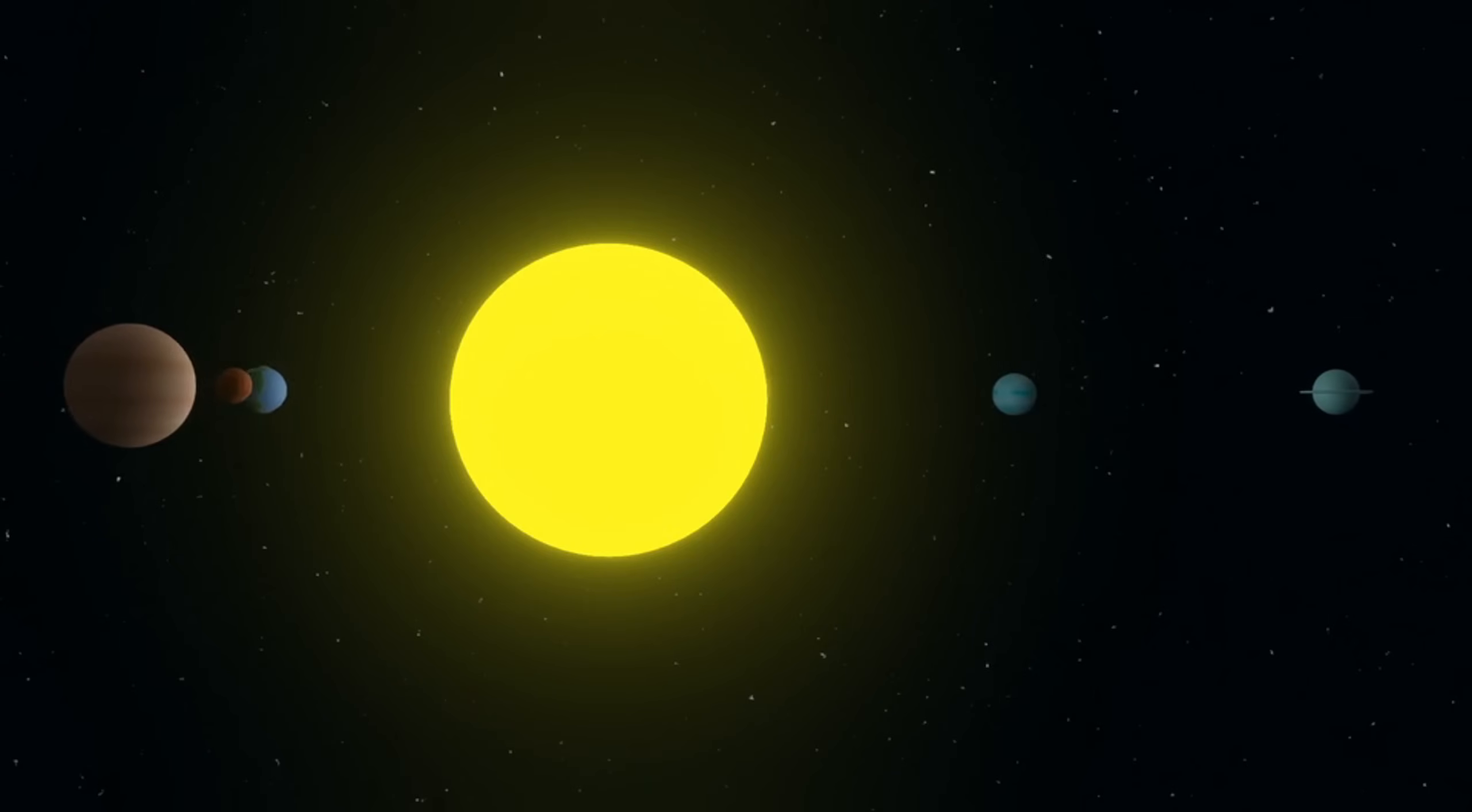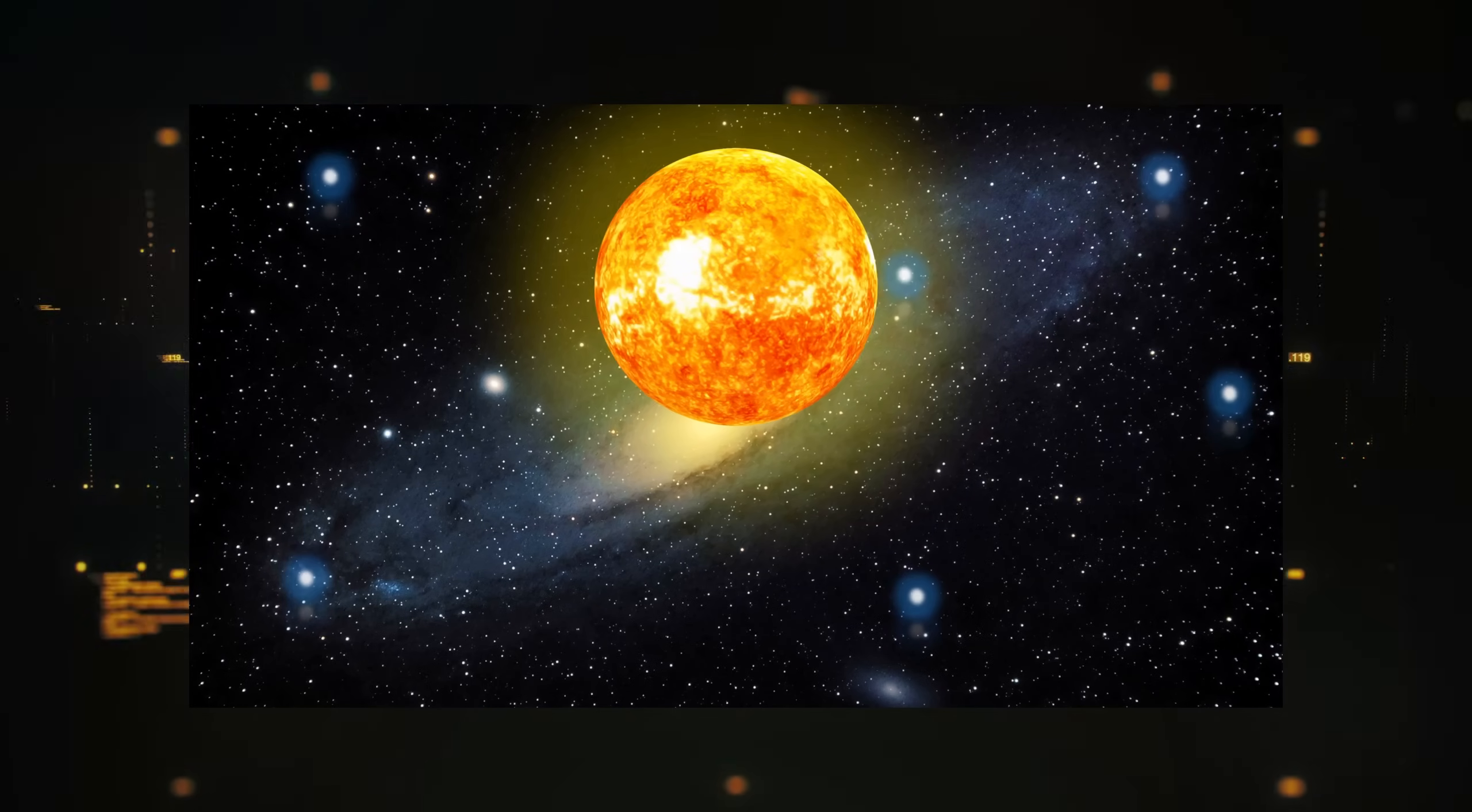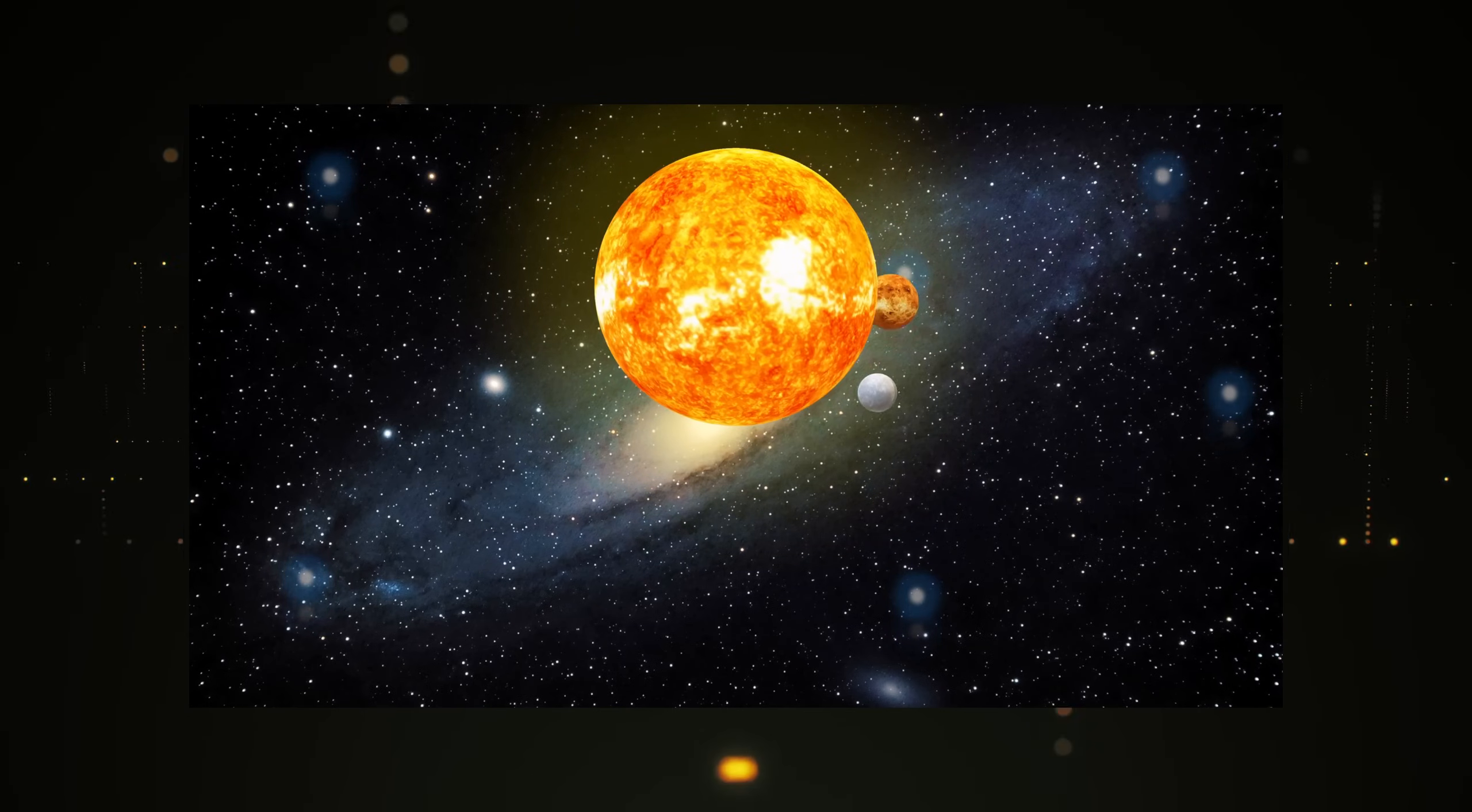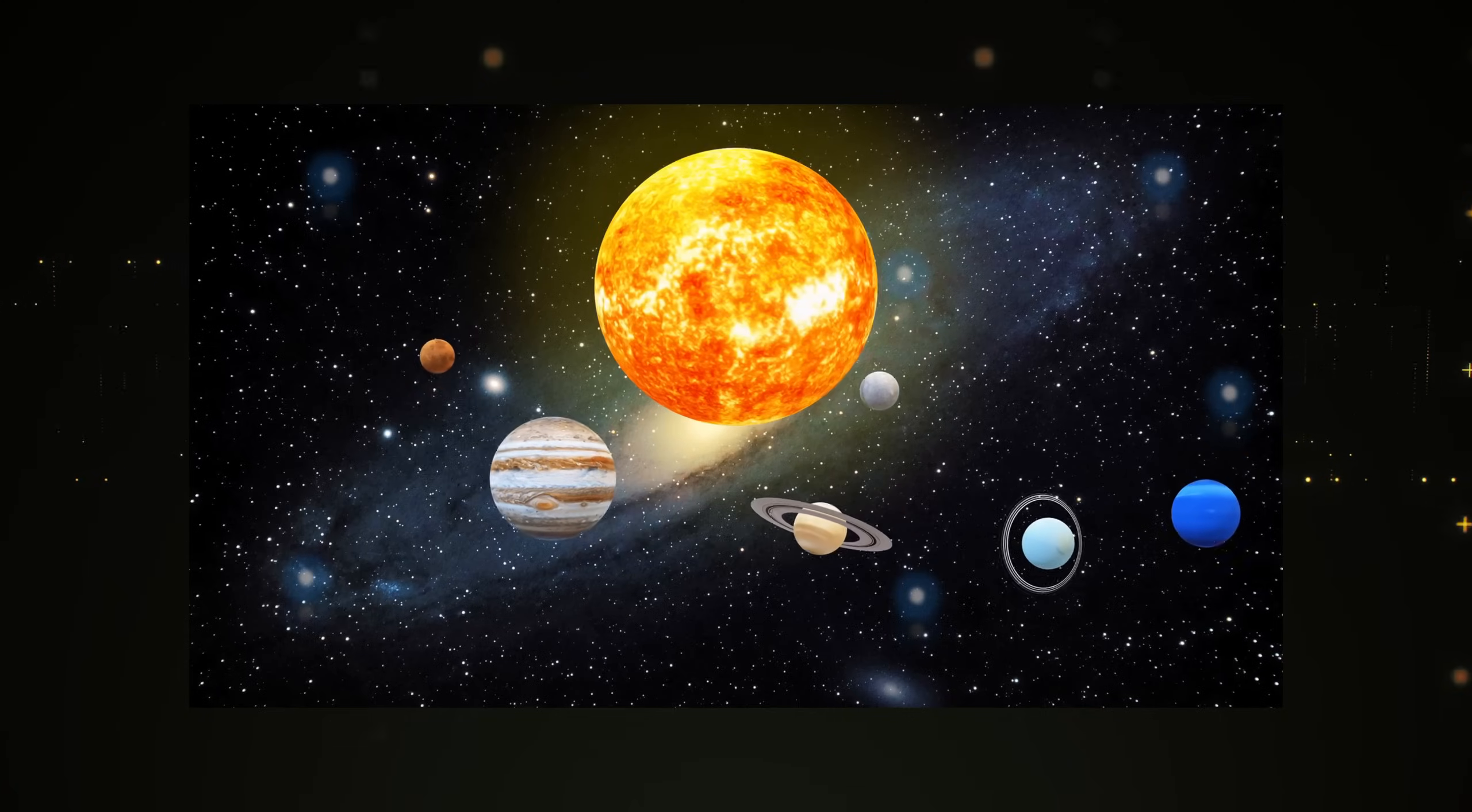Another significant discovery was an unexpected, unexplained pressure at the edge of the solar system. This phenomenon could result from an interaction between galactic cosmic rays, interstellar plasma, and magnetic fields, but the exact cause remains unknown. This pressure indicates that the environment at the outer edge of the solar system is more intricate and turbulent than previously thought.